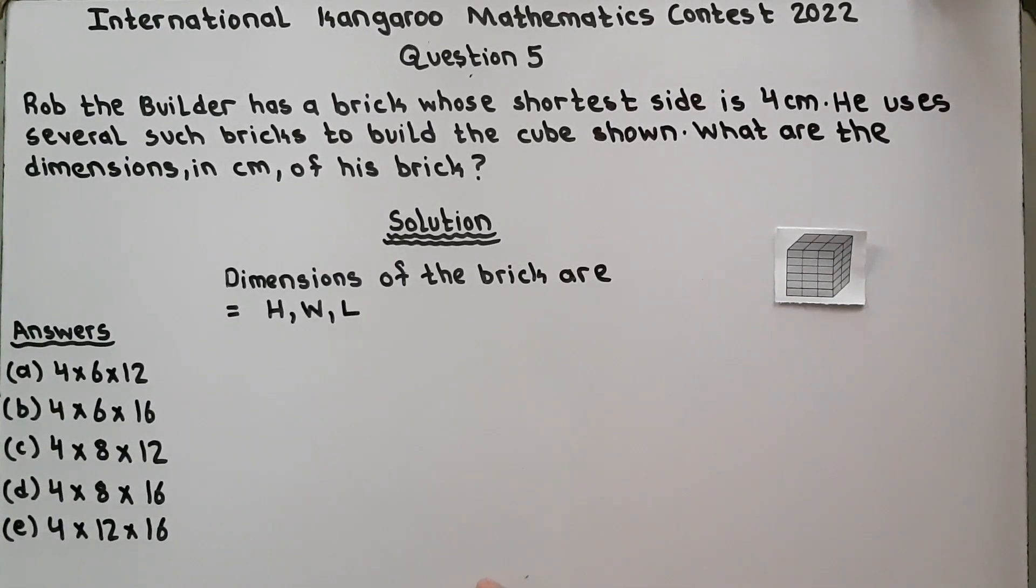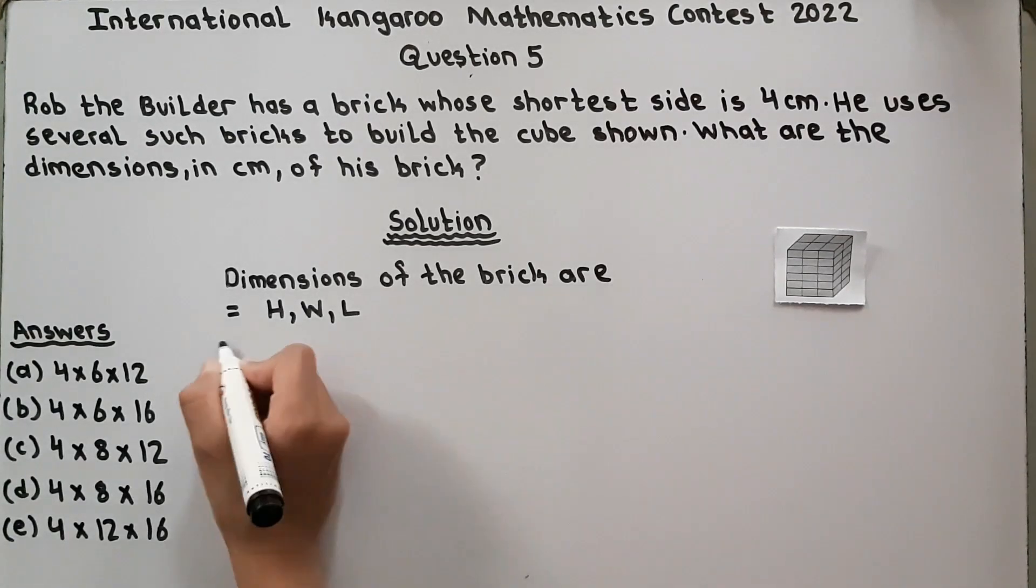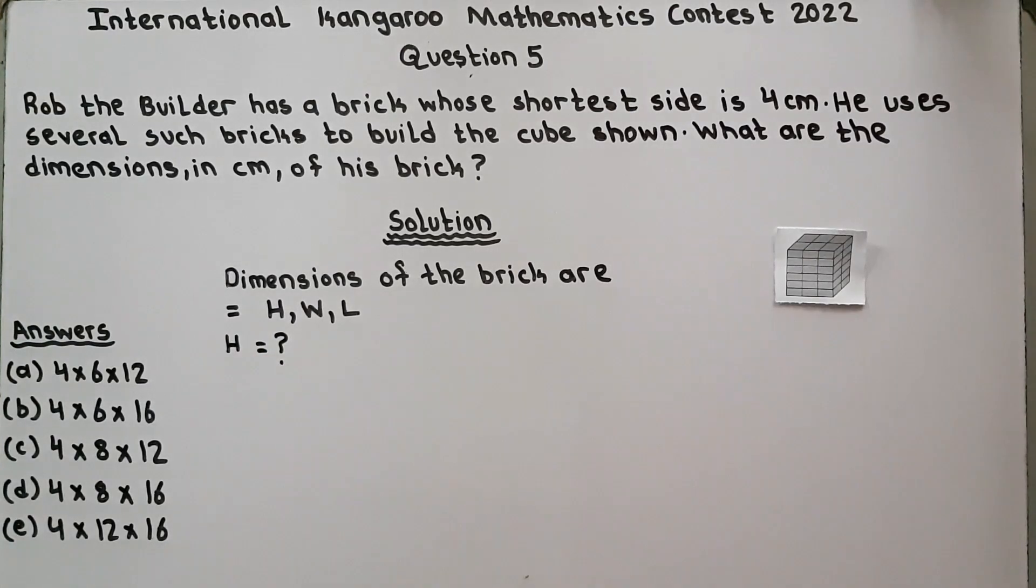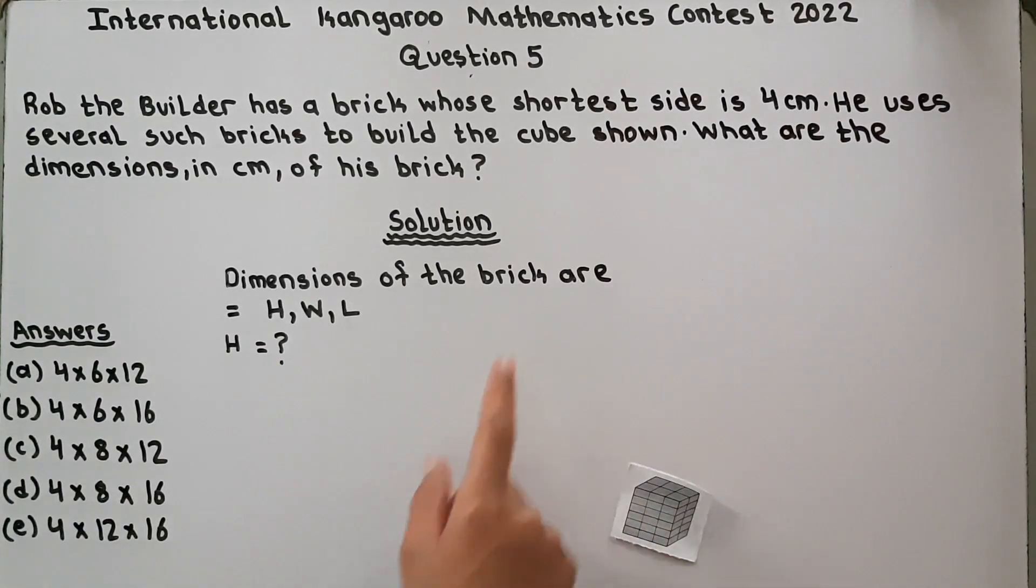H, W, L, and here height is equal to unknown. He has given the shortest side of his brick is equal to 4 cm and that will help us.